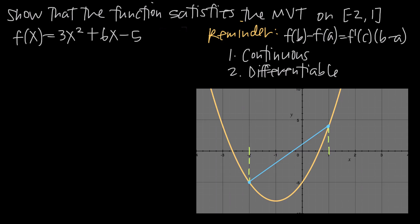We have the graph of the function f(x) = 3x² + 6x - 5 — that's the orange line here. The interval we've been given is negative 2 to 1. Starting from these x-values and going down or up to meet the graph, we get the two endpoint values. Connecting those points gives us a straight line between the endpoints of the interval.